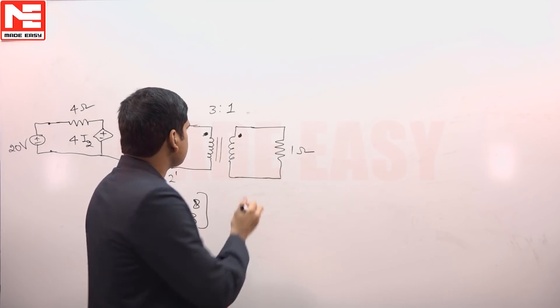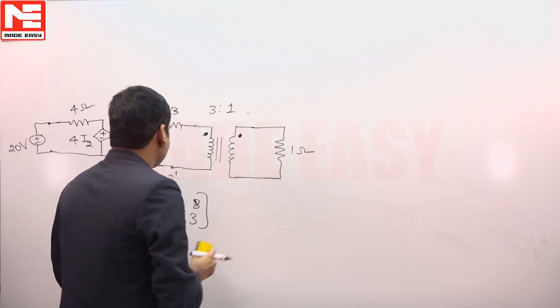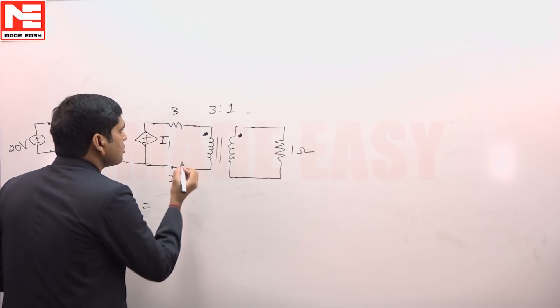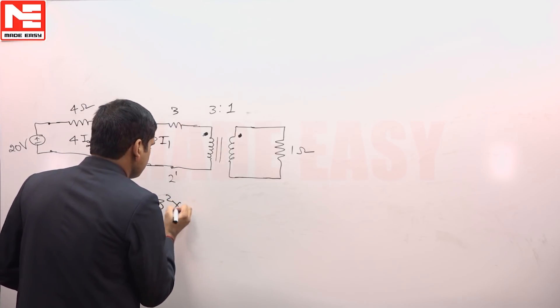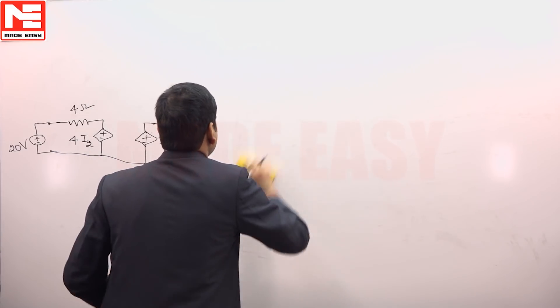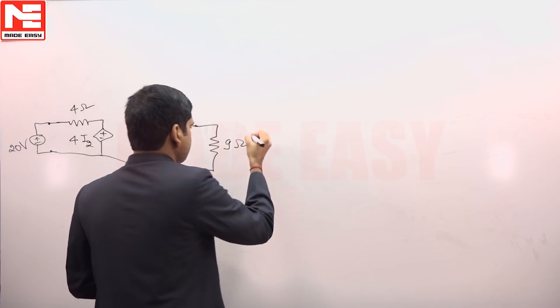This 3 ratio 1, so we can calculate the reflected resistance of this across this side. So R equivalent is equal to turn ratio 3 square into 1, that is equal to 9 ohm. So R equivalent can be represented like 9 ohm at this side.